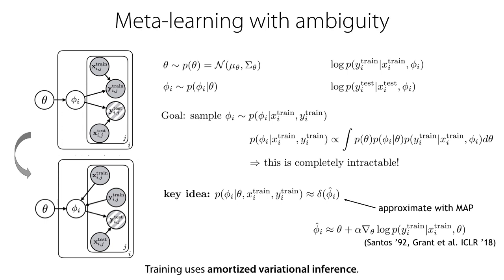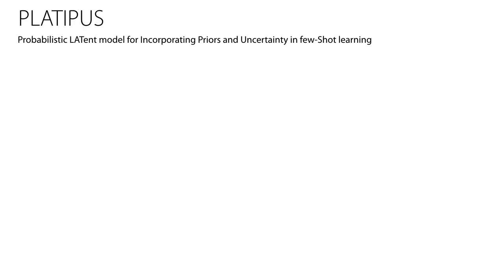To train this model, we use a hybrid inference procedure that incorporates exact MAP inference and amortized variational inference. We refer to our method as a probabilistic latent model for incorporating priors and uncertainty in few-shot learning, or Platypus.